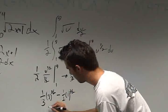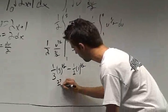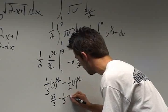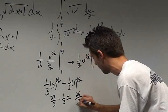This comes out to 27 thirds minus 1 third, which equals 26 thirds.